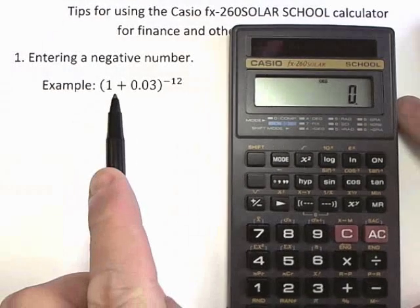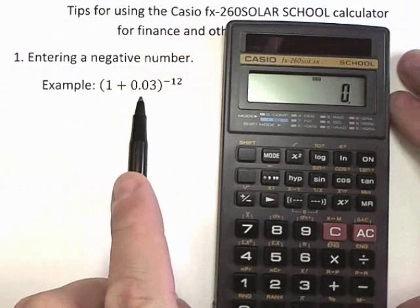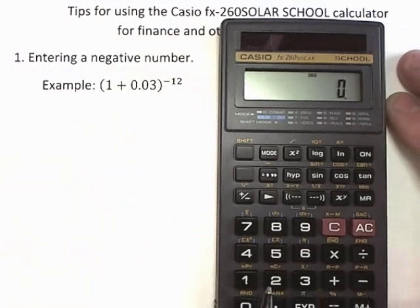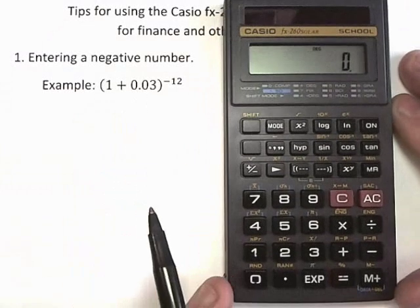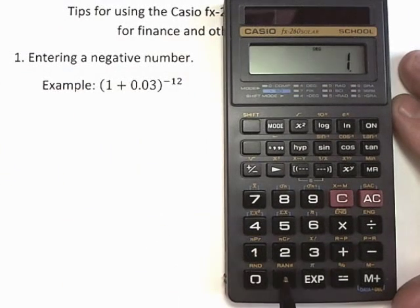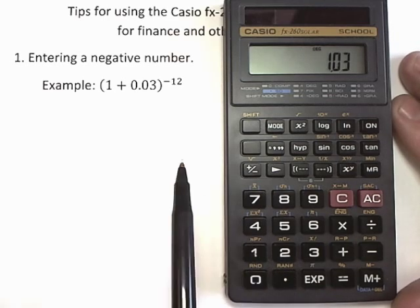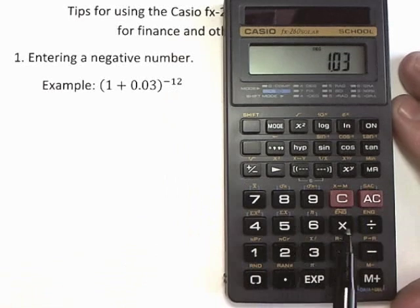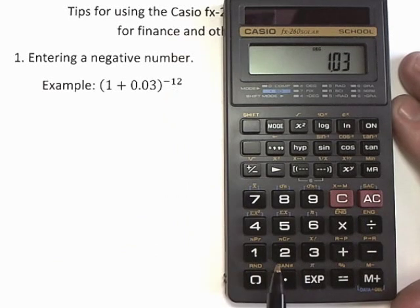So for instance if you had a calculation and you were trying to calculate this quantity, you would start off by adding one and zero point zero three. One plus point zero three equals. Now you need to raise it to a power. Well there's no way to enter a negative twelve directly. There's a little trick and it's easy.